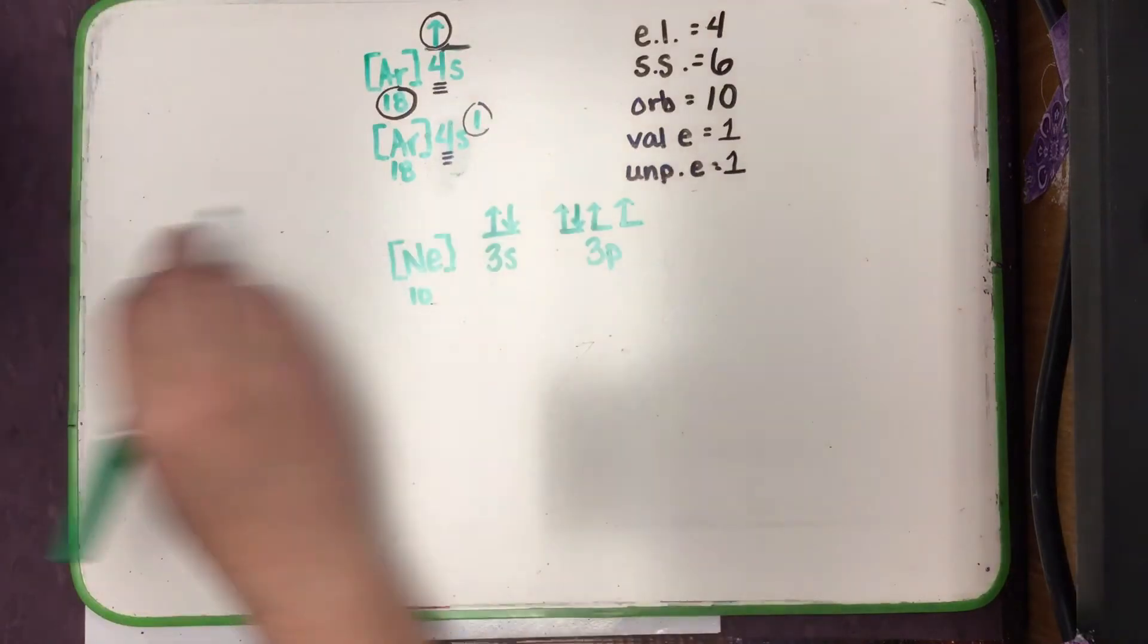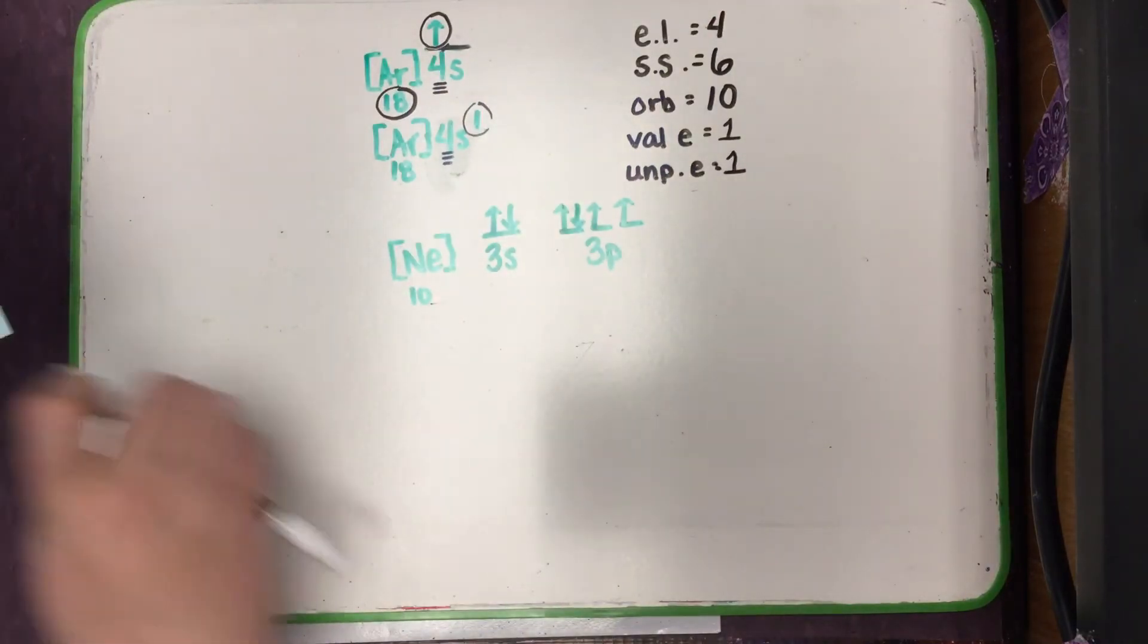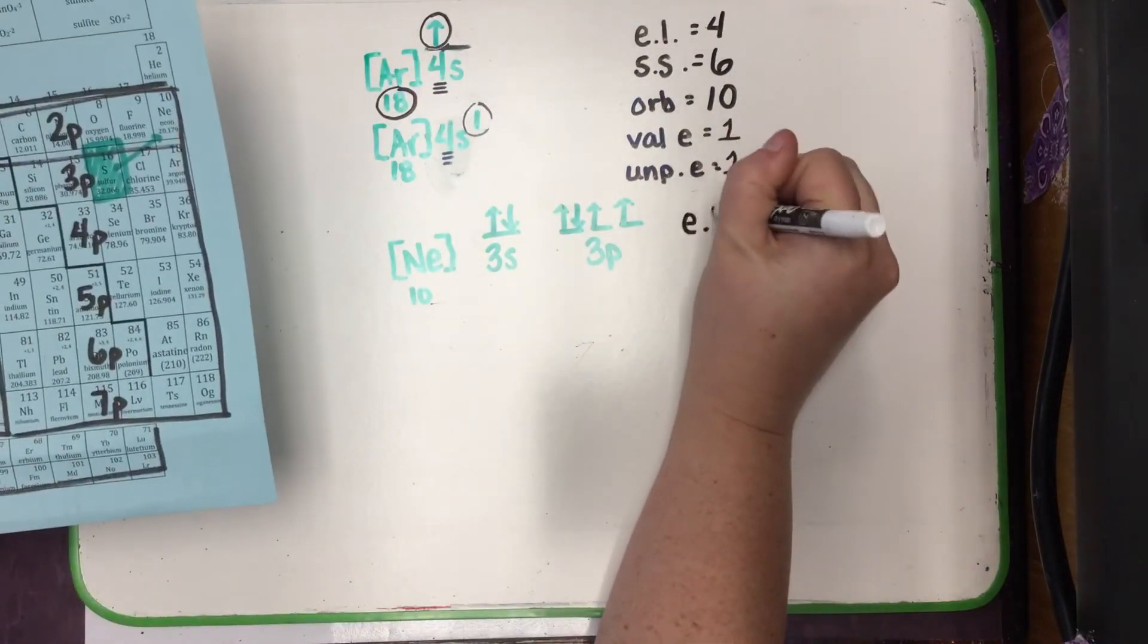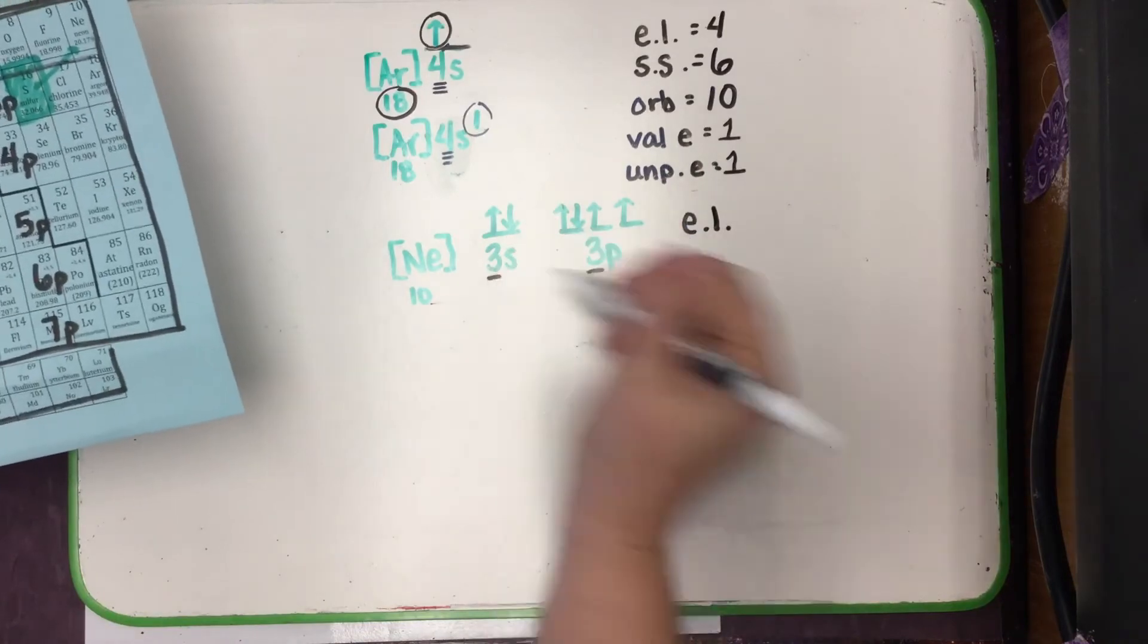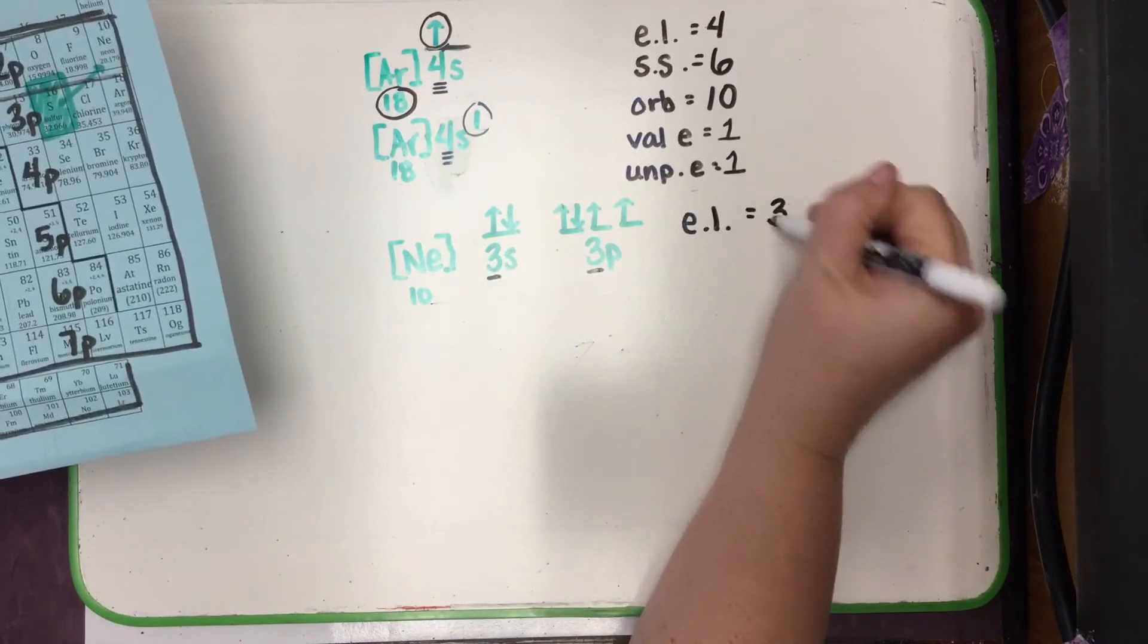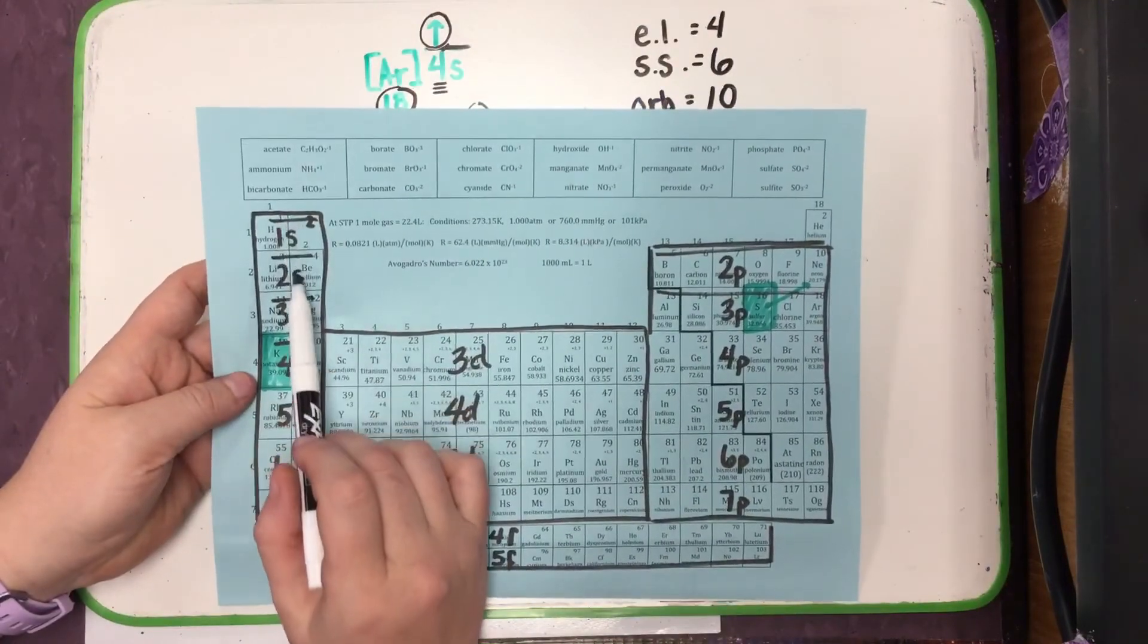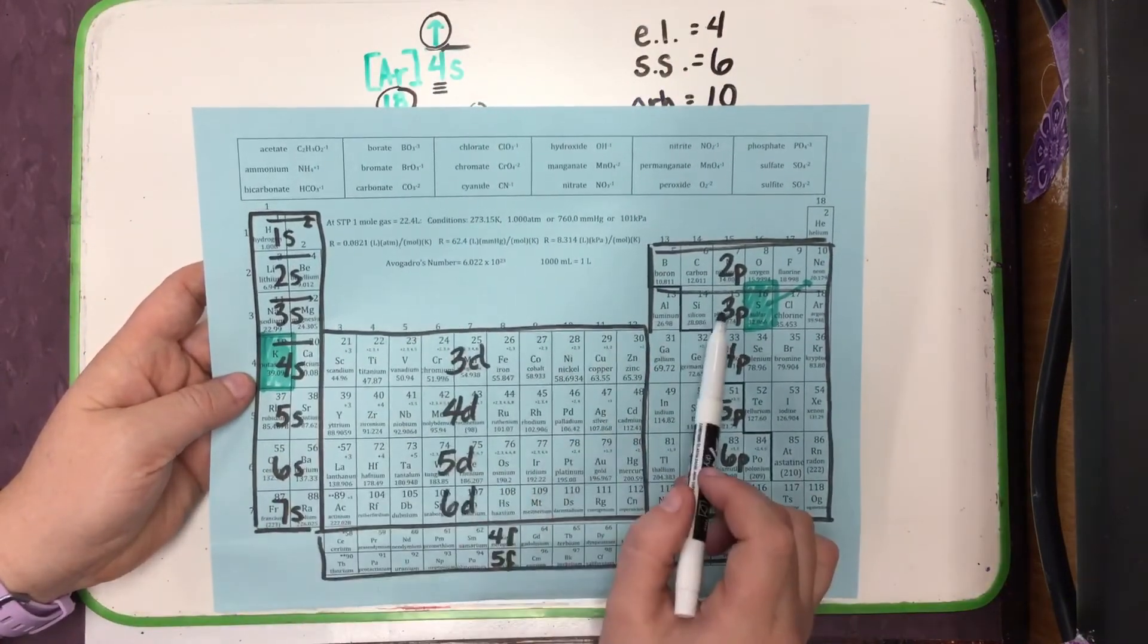So, energy levels. We can look for the biggest number we wrote, which would be 3. Subshells. We can count on the periodic table: 1, 2, 3, 4, 5.